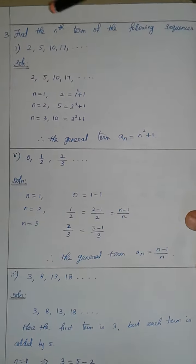Now we can take the fraction formula. The first term is 0, since 1 minus 1 is 0. The second term is 1 by 2. The third term is 2 by 3, since 3 minus 1 equals 2, giving 2 by 3. So the nth term is (n minus 1) by n.